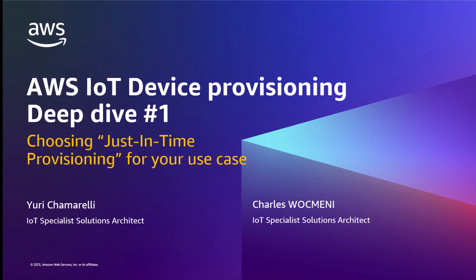Hello everyone, and welcome back to this deep dive series dedicated to device provisioning with AWS IoT. My name is Charles Walkmanee, I'm an IoT Specialist Solution Architect at AWS, and I'll be running this series alongside my colleague and good friend, Yuri. This video is the first installment of the series, and here we'll be discussing our first provisioning option which is just-in-time provisioning, JITP in short.